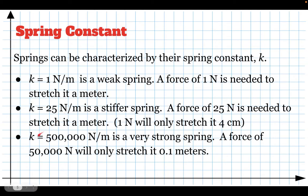And then a spring constant of 500,000 newtons per meter is a very strong spring. So this would be like the coil spring that your car rides on that connects your axle to the frame of your car. Those are very big, strong springs. So you would need half a million newtons to stretch it a meter. For example, a force of 50,000 newtons would only stretch it 0.1 meters or 10 centimeters. So we characterize springs by a spring constant, which is how many newtons it takes to stretch it a meter.